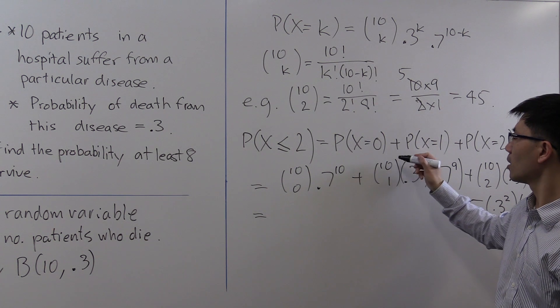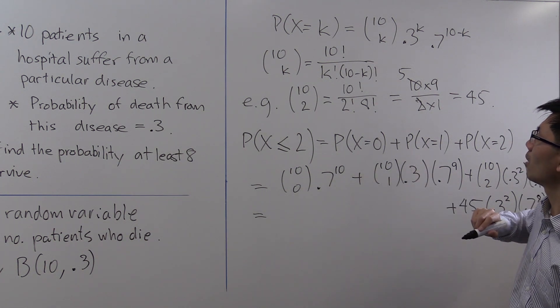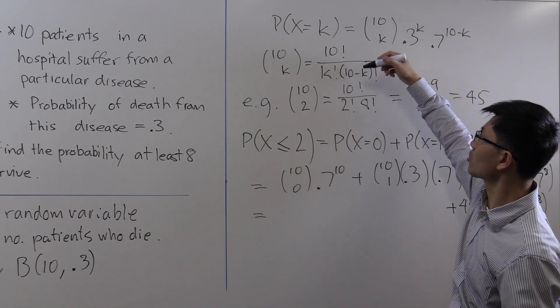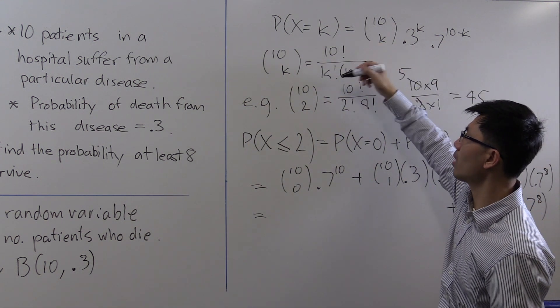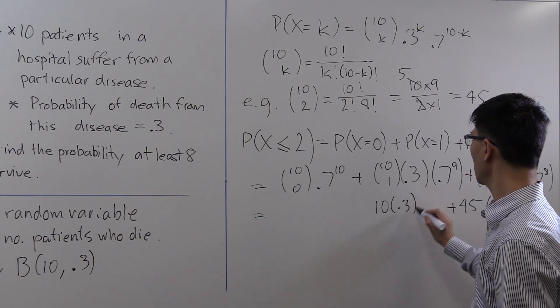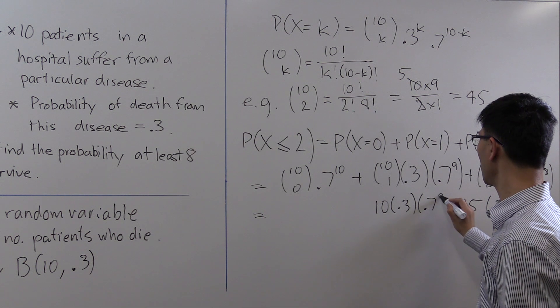So this last term is 45 times 0.3 squared times 0.7 to the 8. For the middle term you have 10 choose 1. If you use the same method, you cancel off the 9 factorial to give you 10 divided by 1 factorial, or just 10. So this is 10 times 0.3 times 0.7 to the 9.